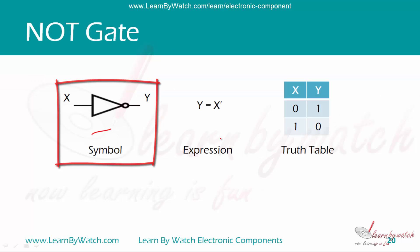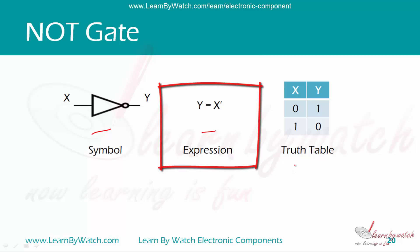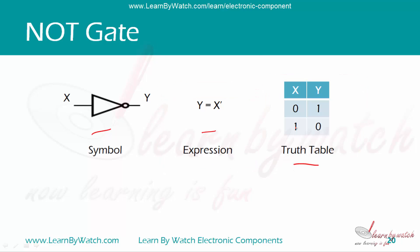This is the symbol of NOT gate, this is the expression, and this is the truth table. From the truth table, we can see that if the input is zero, the output is one, and when input is one, then output is zero. The expression is y equal to x dash, where this dash represents the complement or the inverse of the input.